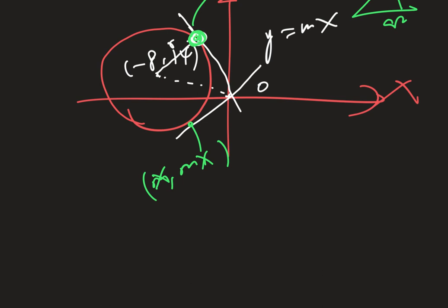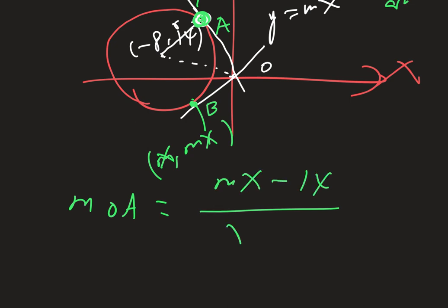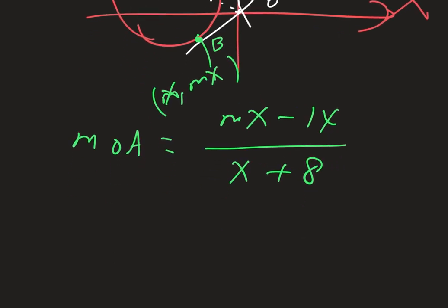From here you can find r and the distance. I'm going to use the method where I let the point be (x, mx) and substitute into equations. First I need to find the gradient. Let's call the tangent point A. The gradient of AO is equal to (mx - 14) / (x + 8).